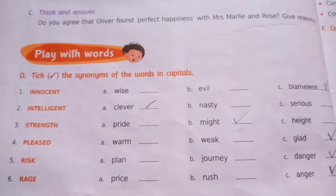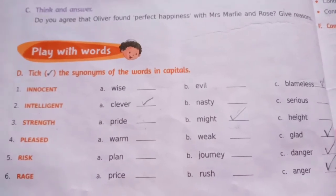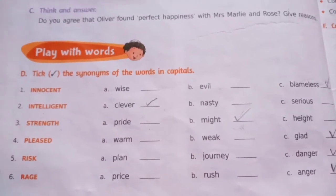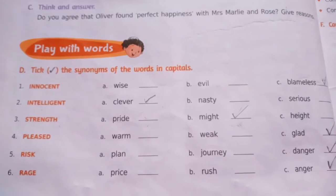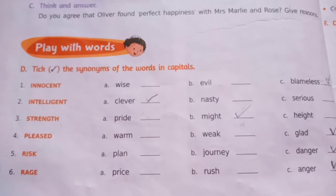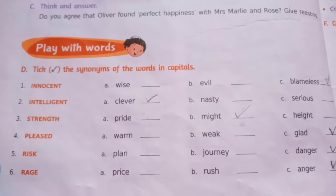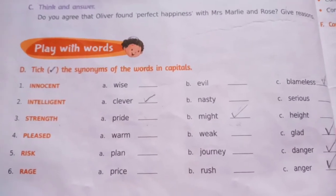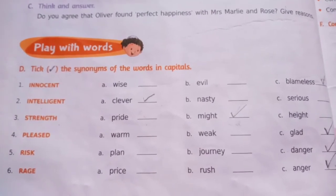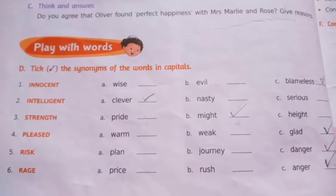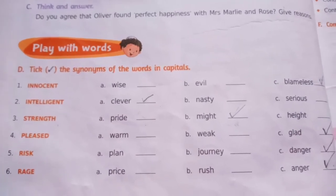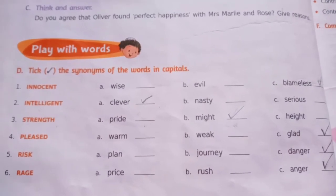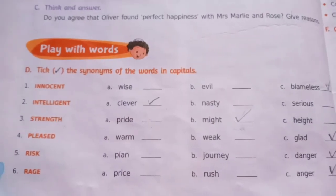Pleased — options are warm, weak, or glad. Pleased means kisi se impressed ho jana; glad means the same. Risk — options are plan, journey, or danger. Risk means danger — kisi danger mein par jana. Rage — options are price, rush, or anger. Rage means anger — gussa.